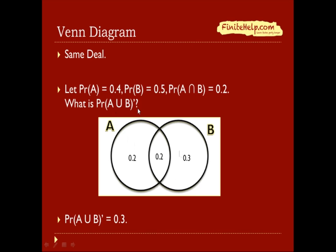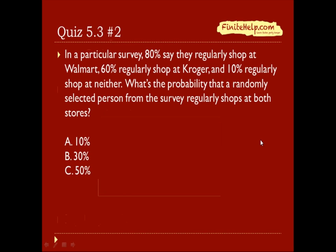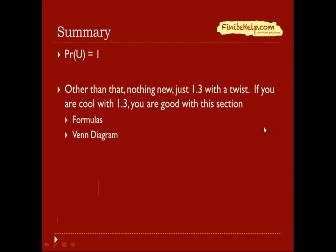So that means, well, the universal set adds up to 1, so that means the complement of A union B would have to be 0.3.